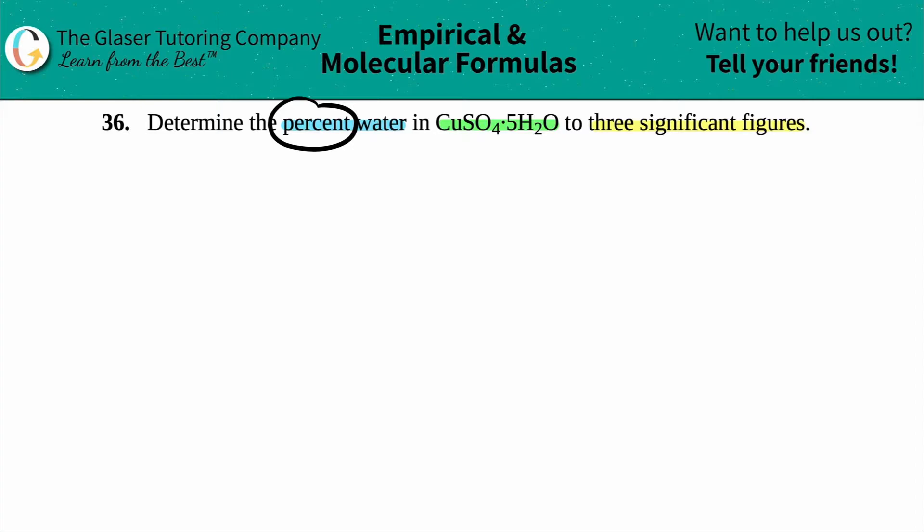So we need to find a percent, right? A percent of anything, remember we learned this in math class, percent of anything is just a part divided by a whole and then just multiplied by 100. That's basically what this is here, but we just need to give a little bit more information.